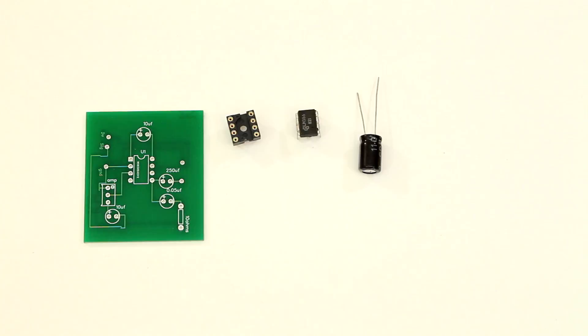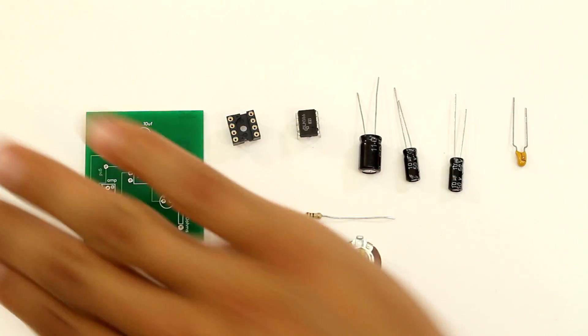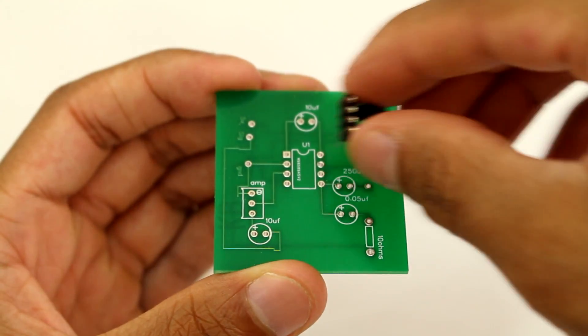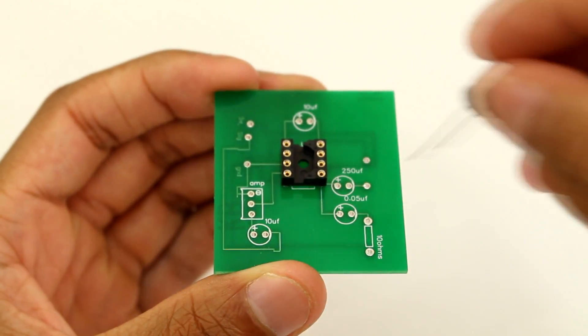Now we're going to need a few of these electronic parts. I assure you all of them are very cheap and easy to acquire and I'll leave links in the description below. Now once you have all that, we can start installing them into the PCB we designed.